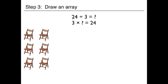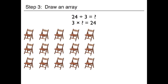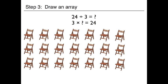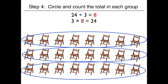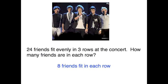Let's keep counting until we get to 24: 3, 6, 9, 12, 15, 18, 21, and 24. Now that we have our total of 24, we can circle each group and find out how many are in a row. There are 8 in each row, so we know the missing factor is 8. 24 divided by 3 equals 8, and 3 times 8 equals 24. So now we know 8 friends can fit in each row.